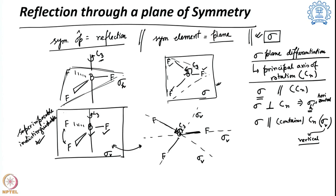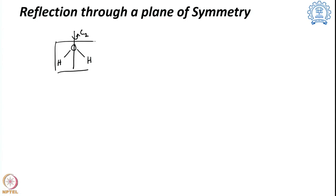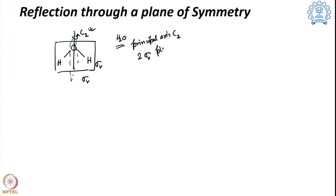For the water molecule, the principal axis is C2. Water has two sigma planes: the plane of the paper and a plane bisecting it, both containing the C2 axis. Since both sigma planes contain the principal axis C2, they are both σv planes. So H2O has one C2 principal axis and two σv planes.